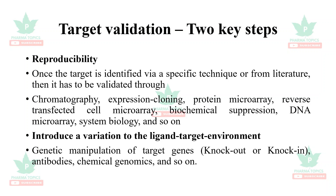A particular gene related to the disease can be knocked out, producing knockout transgenic animals, or a particular gene manipulation can be done to increase the expression of a particular gene. For example, in the case of cancer, these knockout or knock-in transgenic animals are very useful in validating the targets.